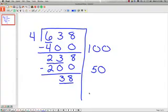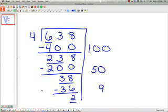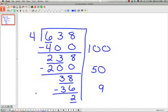4 times what gets as close to 38? 9. So 4 times 9 is 36. I subtract 2. Underline the 2. Can 4 go into 2? No, it cannot. So 2 is my remainder.